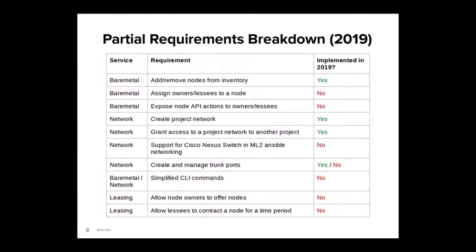Let's look at the partial requirements breakdown from the early days back in 2019. It's not a complete requirements list, but it illustrates a lot of the work that we've done. Starting with the bare metal service, or Ironic — we need to be able to add and remove nodes from inventory, something Ironic already does very well. We also need the ability to assign owners and lessees to a node, and for those owners and lessees to be able to perform limited API actions. This translates into node multi-tenancy, something that was not supported by Ironic when we started, and it ended up being something we implemented ourselves.